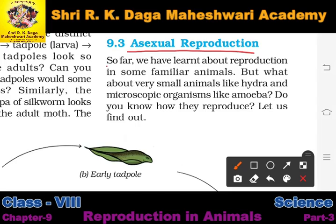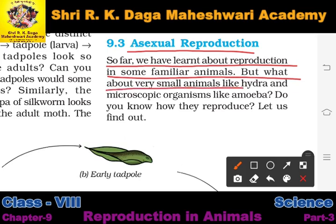Now the next topic we are going to discuss is asexual reproduction. We have learnt that sexual reproduction occurs when male gametes fuse with female gametes — that is called sexual reproduction, which is of two types: internal fertilization and external fertilization. Now we are going to discuss what asexual reproduction is, and what about very small animals like hydra and microscopic organisms like amoeba?